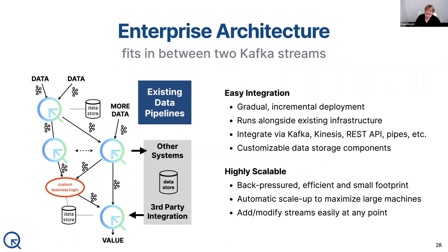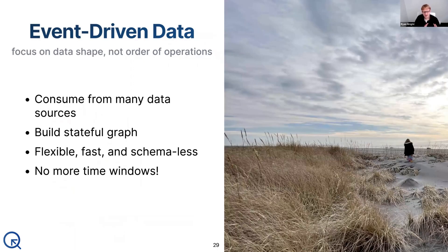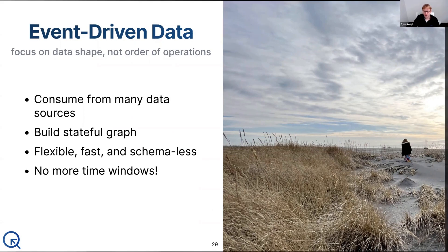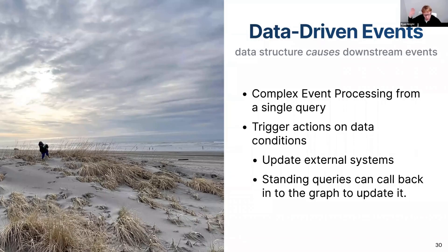Quine is highly scalable, it is back-pressured, and it is meant to hook into existing data pipelines very easily. This event-driven data allows us to focus on the shape of the data instead of having to juggle the order of operations. We'll consume from many data sources, build it together into a stateful graph, and banish this idea of time windows being required to interpret or join data streams. With event-driven data and a focus on the shape of the data itself, we can then turn our focus toward data-driven events — what shapes in the data do we actually want to cause downstream events? Certain graph-structured patterns can be processed with a single standing query, and all those results can trigger actions to update external systems or call back to update the graph model itself.